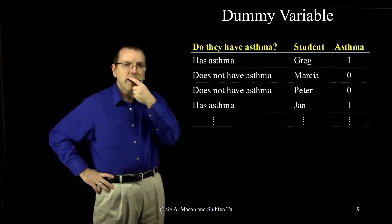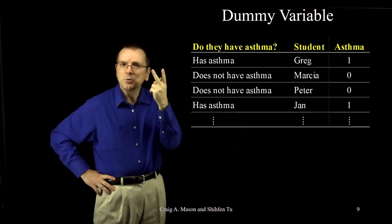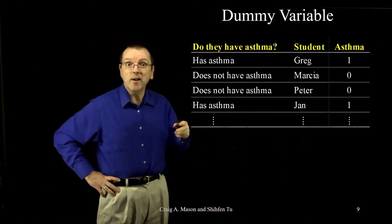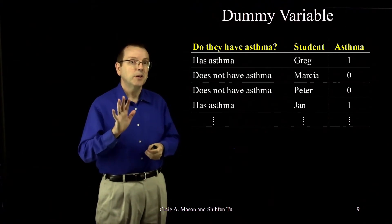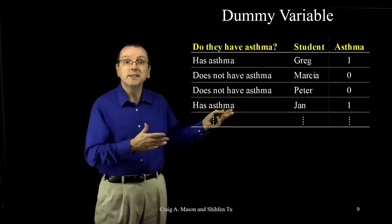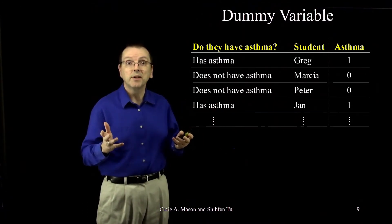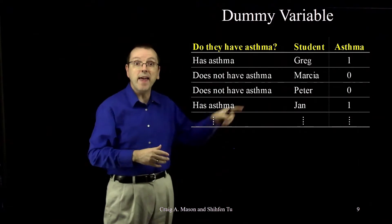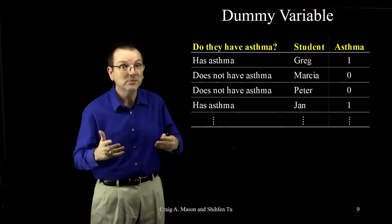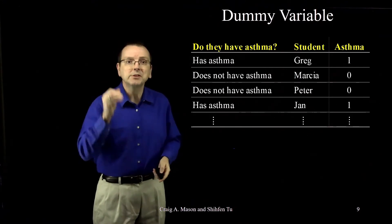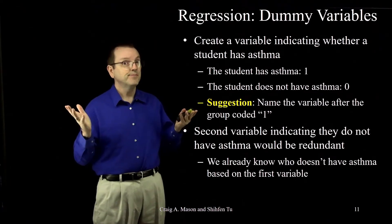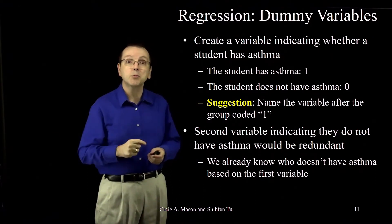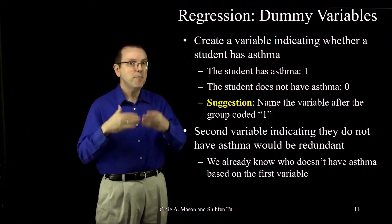Now you may ask yourself: well, I've got two groups — don't I need two variables? Should I make another dummy variable for students who don't have asthma? But if you think about it, a second variable would be completely redundant with the first. If you don't have asthma, you're already perfectly identified by that zero in the asthma variable. A second variable would tell you absolutely nothing. Notice that two groups only require a single dummy variable to represent both groups.